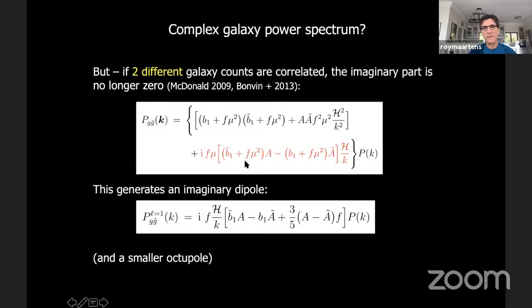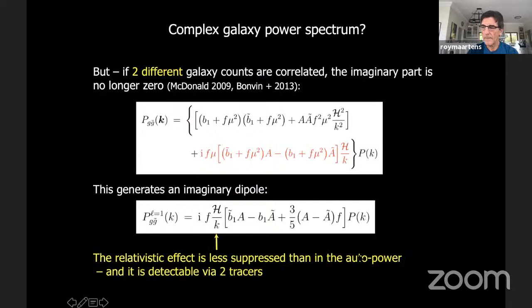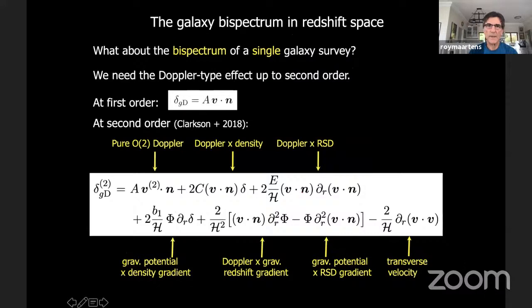This relativistic effect generates an imaginary dipole — L=1 — from an odd power of mu. There is also an octopole, which is smaller. This relativistic effect in the cross-power spectrum is less suppressed than in the auto-power. As shown by Bonvin and collaborators in 2013 and later papers, this is detectable via two tracers in next-generation surveys, potentially even in some current surveys.